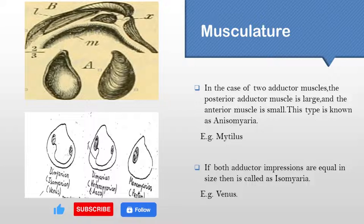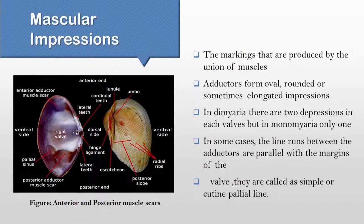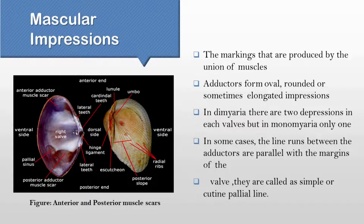If the posterior one is the larger one, it will be named anisomyarian. In case there is only one posterior muscle present, then the form is called monomyarian. The marks produced by the adductor muscles on the interior portion of the shells are known as adductor muscle scars. This muscular impression can be oval, rounded, or elongated in shape. In the case of dimyaria there will be two depressions, and in the case of monomyaria there will be only one depression.